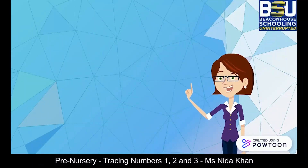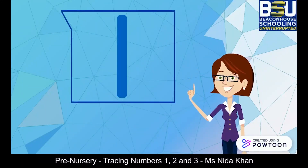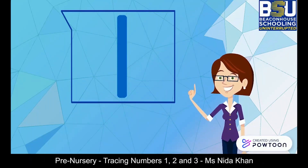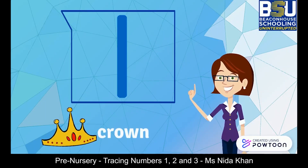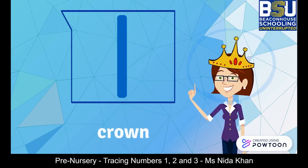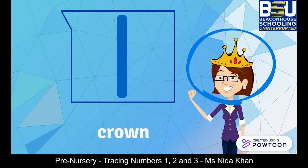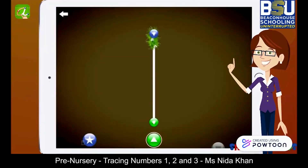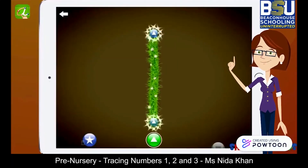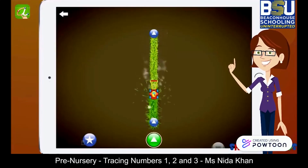Kids, do you know which number is this? Yes, you are right. This is number 1. Let's count with me — one crown. Oh look, I am wearing a beautiful crown. Let me tell you how to form number 1. Start from the top, go straight down. This is number 1.